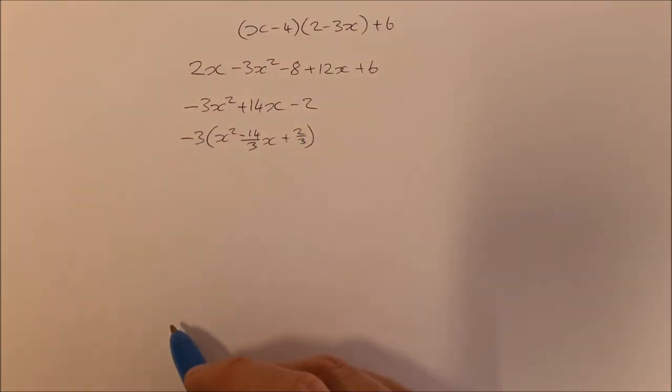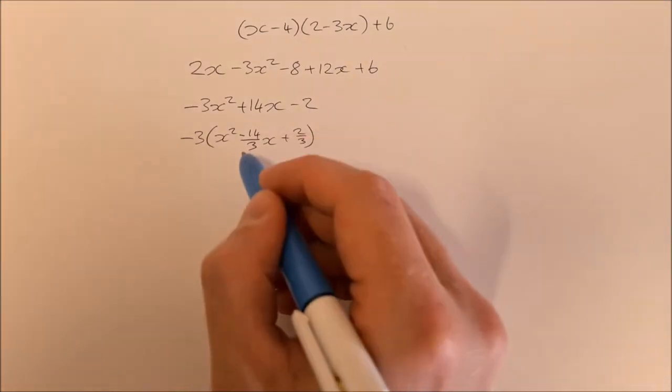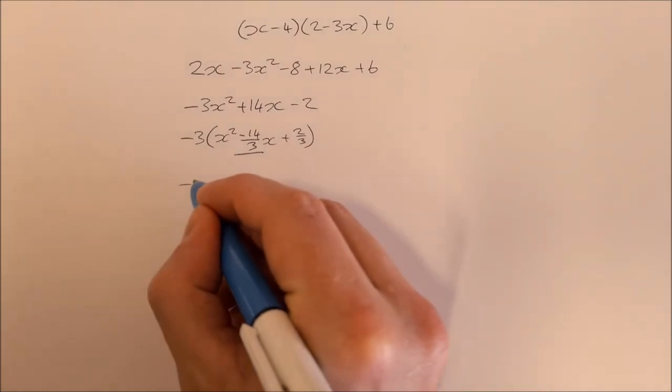Now this might look a bit more complicated than the other ones, but we're still going to do the same thing. So we're going to take the coefficient of x, which is minus 14 over 3.